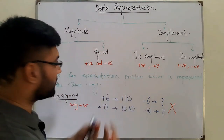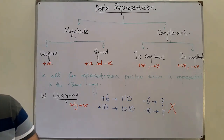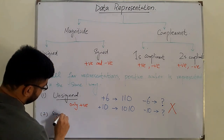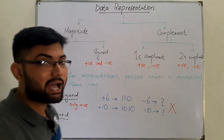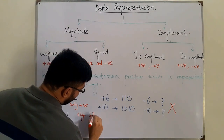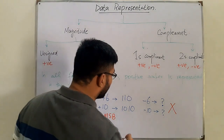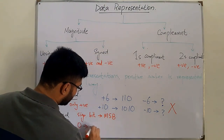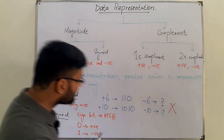Moving to the sign magnitude method, here we have a sign bit. The sign bit is placed at the most significant bit (MSB) position. It is zero if the number is positive, and one if the number is negative.